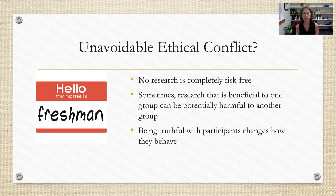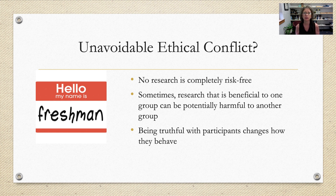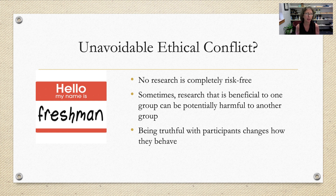Moving ahead and looking at more current studies: the book makes very good points about the limitations of avoiding all ethical conflict while still being able to conduct research. No research is completely risk-free — there's always some level of risk, even if it's minimal. Sometimes research beneficial to one group could be potentially harmful to another, and we have to weigh that out. And when it comes to deception, sometimes being truthful with participants about what the study is about changes how they behave — and if participants change their behavior, you no longer have a valid study.